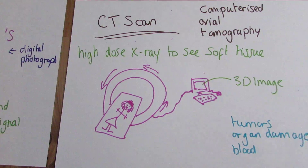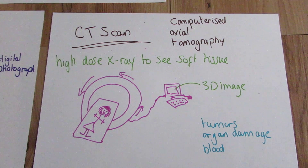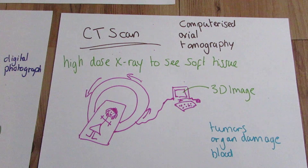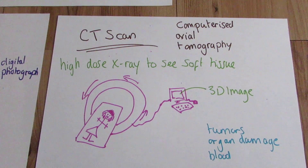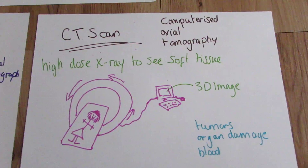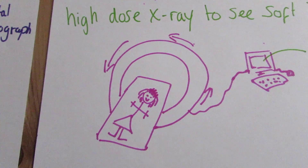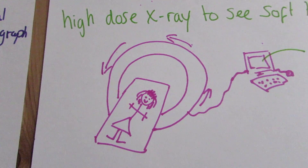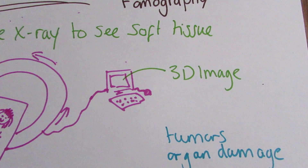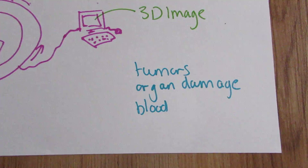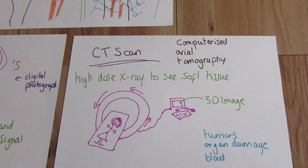X-rays are also used in CT scans — computerised axial tomography. This is a high dose of x-ray, much higher than you would get if you were just looking at your arm or your leg, and they are looking to see soft tissue. These are generally much bigger and circular, and they rotate. They send a signal to the computer which produces a 3D image. These can be used to find tumours, to see any organ damage, or if there's any problems with the blood vessel.